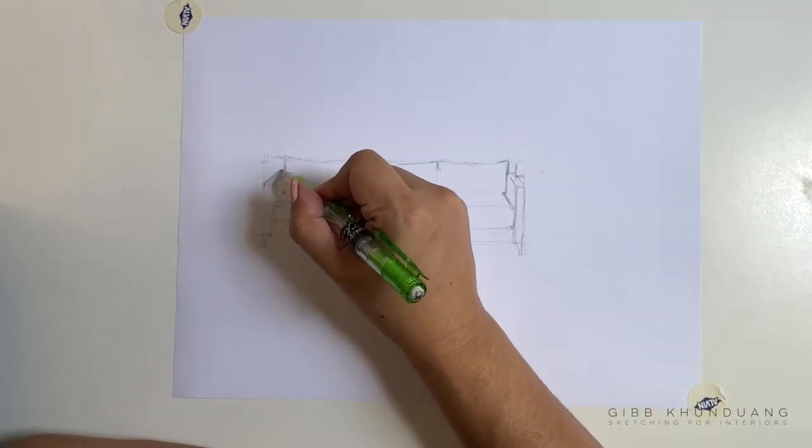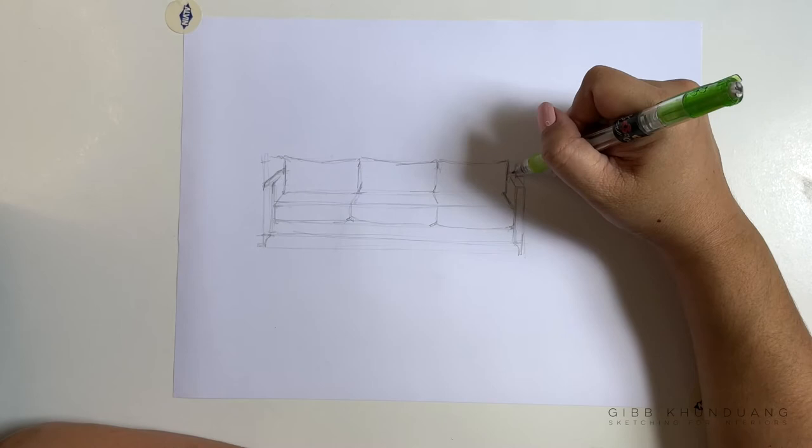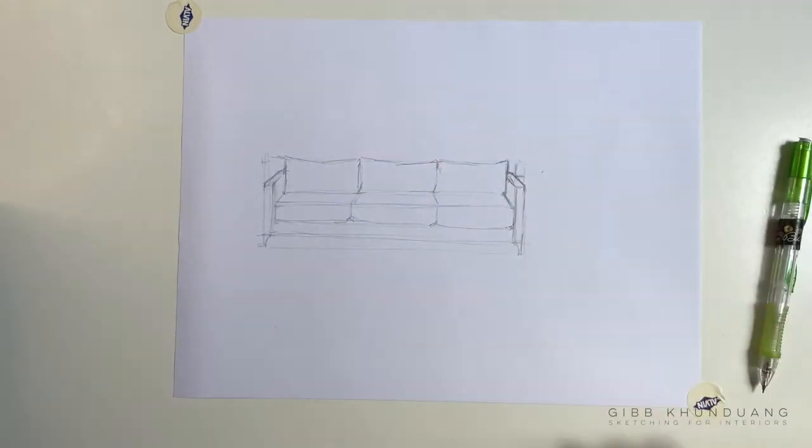And so once you're happy with it, you can harden the lines if you want, or if you don't want to, you don't have to. If it's a light colored sofa, I'd probably erase some of these lines to get a really light sketch.